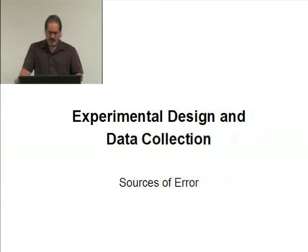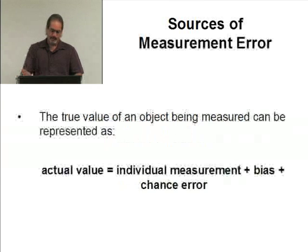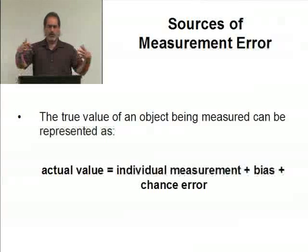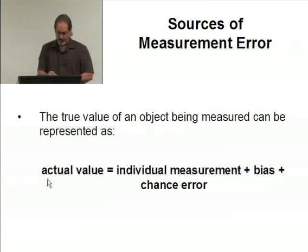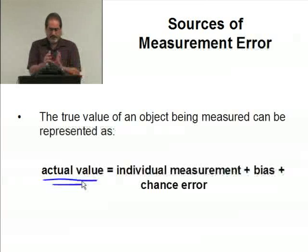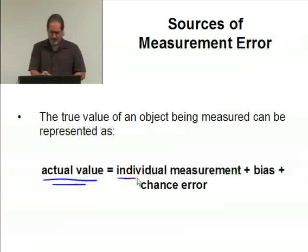Let's continue our discussion regarding experimental design and data collection by talking about sources of error. When you go out and collect data, the true value of an object being measured can be represented as the actual value. This is the true value, and it's going to be equal to the individual measurement.